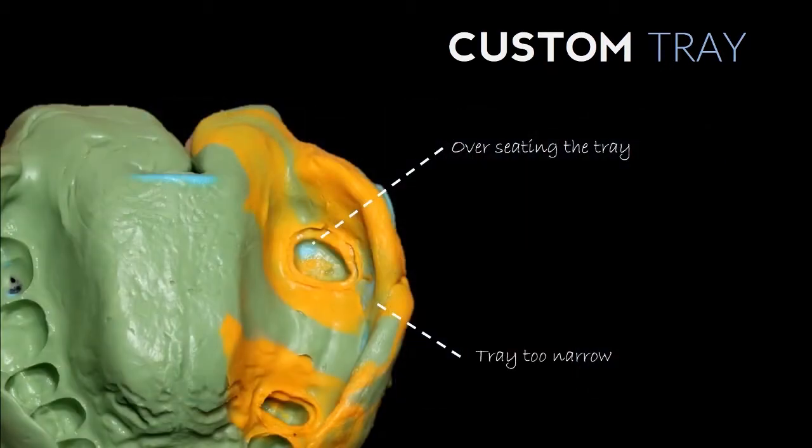Here's an example of what we may see when we use a stock tray. Here we see that the tray is actually too narrow and we can see some show-through of that material and the tray is contacting the arch.